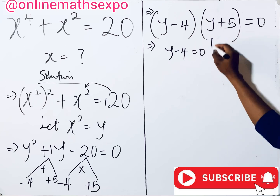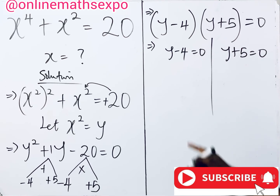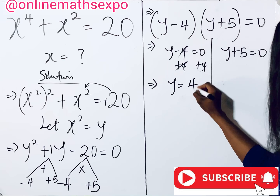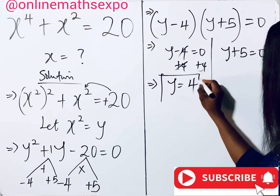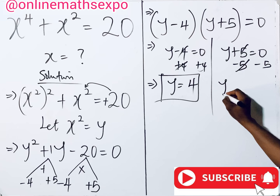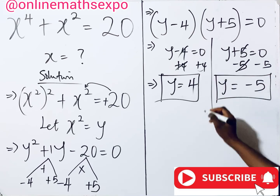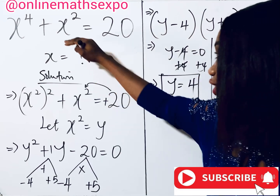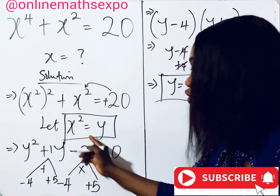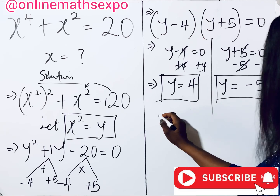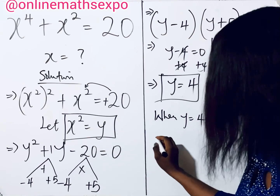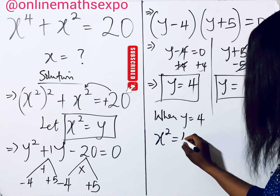This means either y − 4 = 0 or y + 5 = 0. For the first, adding 4 to both sides gives y = 4. For the second, subtracting 5 from both sides gives y = −5. These are our two values of y. But remember, the question is about x, not y, so we now back-substitute.